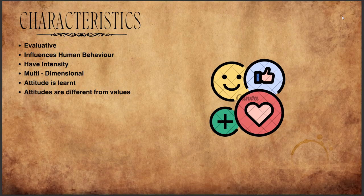Looking at the characteristics of attitude — the first is 'evaluative.' It involves an individual's positive or negative evaluation of an object, person, group, idea, or event — essentially judging a person or object. It also influences human behavior: a positive attitude towards a thing or a person will influence behavior towards that person or thing favorably, and vice versa may also happen.